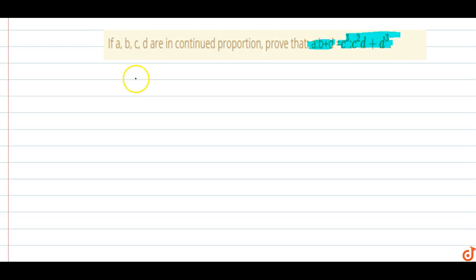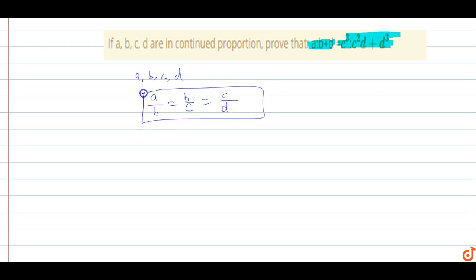We know that A, B, C, D are in continued proportion, so A by B is equal to B by C equal to C by D. We have to prove A by B plus D equal to C cubed by C squared D plus D cubed.